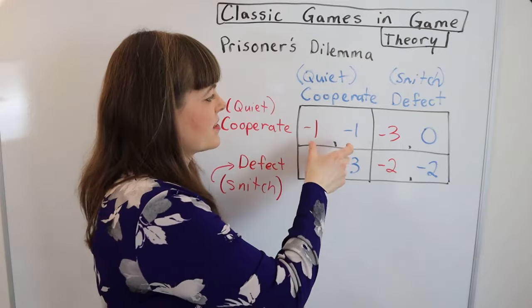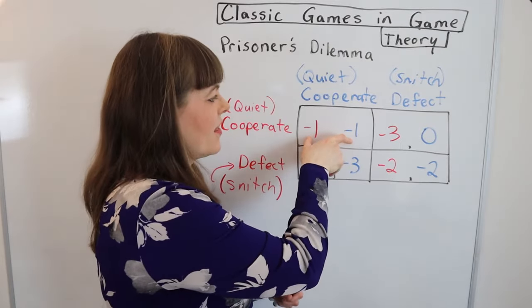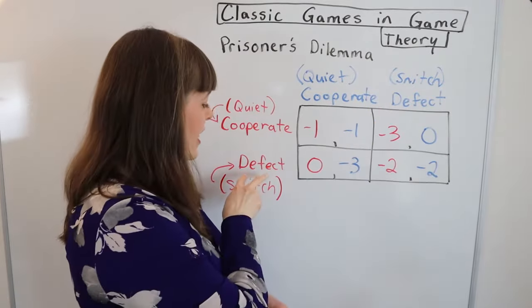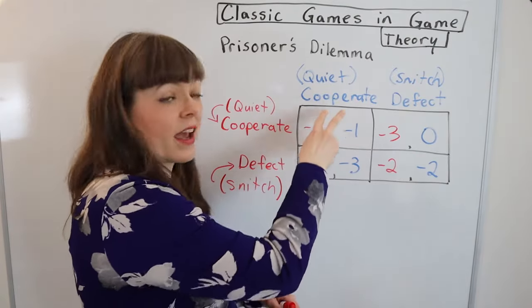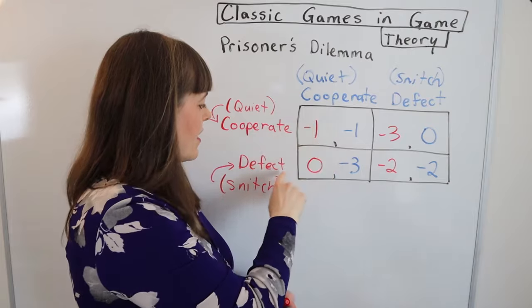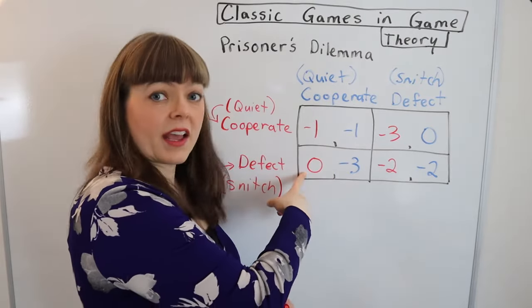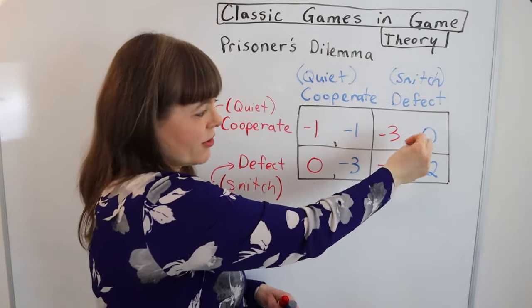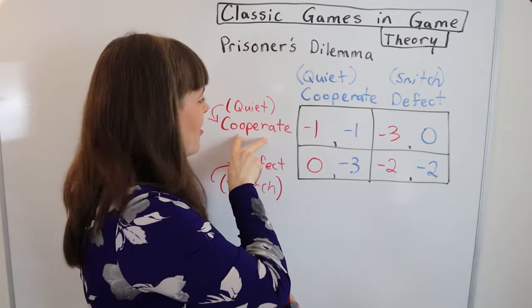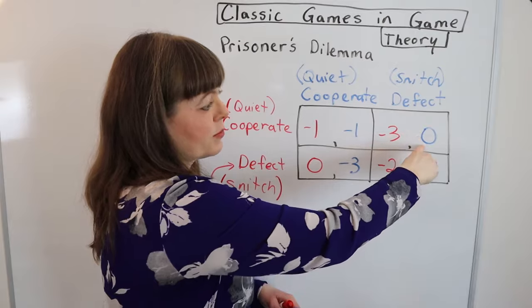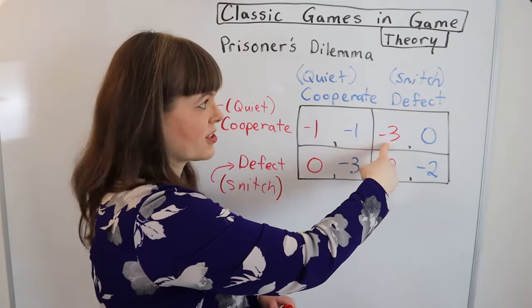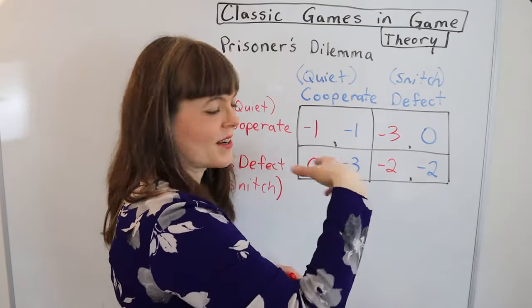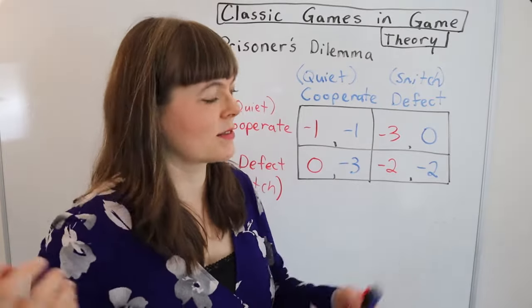If neither player snitches, then they both get the one year in prison that the police can convict them of based on the minor crime they have evidence for. If one player gives evidence against their friend and the other cooperates and doesn't say anything, then the person who gave the evidence against their friend, they get off scot-free and the other player, the one who stayed quiet, they go to jail for three years. And the reverse is true up here. If the red player is quiet and the blue player snitches, the blue player gets off and the red player has three years in prison. If they both give evidence against one another, then they both get two years in prison because of course the police have evidence against both of them.